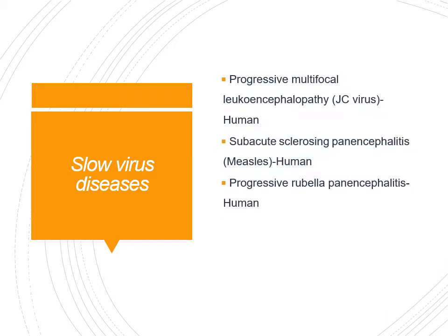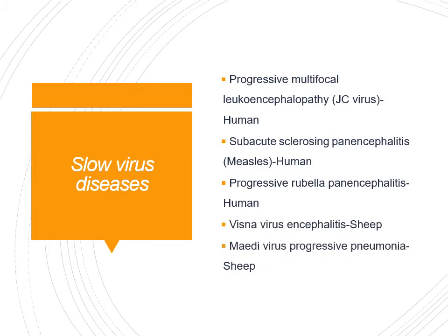Slow virus diseases in humans include: progressive multifocal leukoencephalopathy caused by the JC virus, subacute sclerosing panencephalitis seen after measles infection — children who had primary measles infection develop this slow virus disease many years later — and progressive rubella panencephalitis after rubella infection. In animals, the slow virus disease includes visna and the maedi virus, seen in sheep.